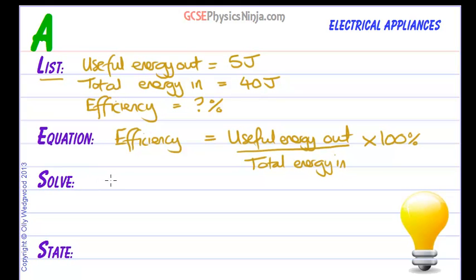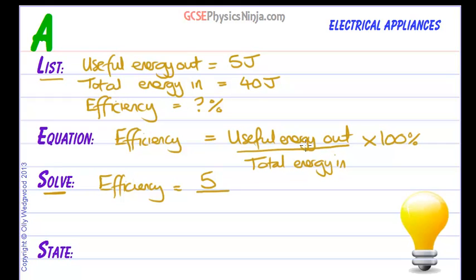Now let's put the numbers in. Efficiency equals useful energy out — 5 joules — divided by total energy in — 40 joules — times 100. Don't worry about putting units in the solve part of the calculation as it will just make it more complicated. That gives us 12.5%.